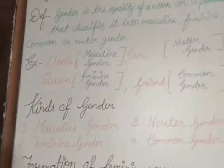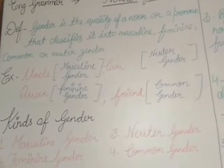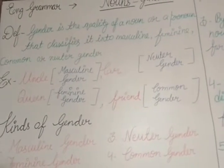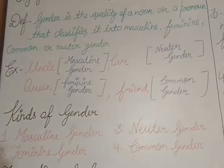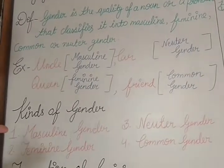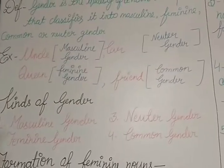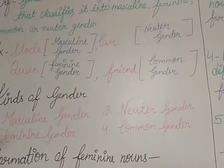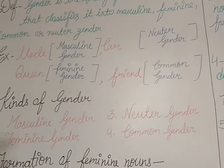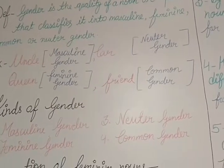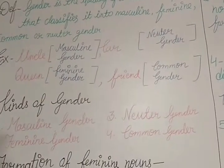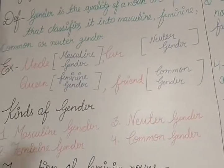The word 'uncle' tells you it is a masculine gender. The word 'car' tells you it is a neuter gender. The word 'queen' in itself tells you it is a feminine gender. And when I say 'a friend of yours,' friend can be both — it is a common gender. Friend can be a male or a female.